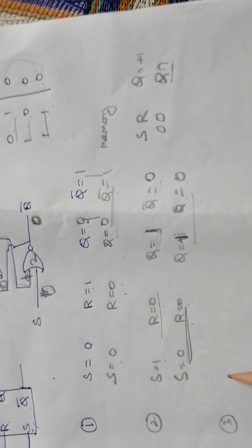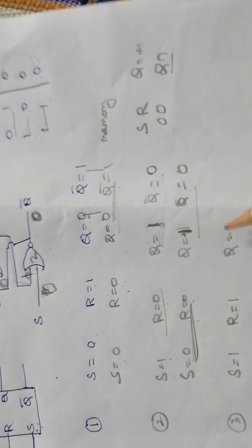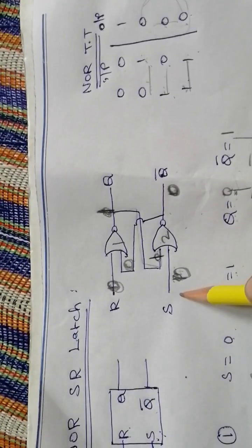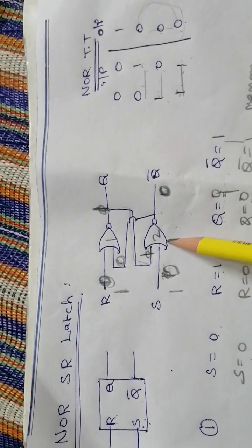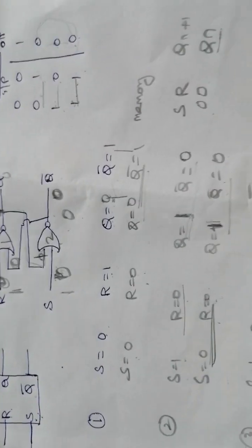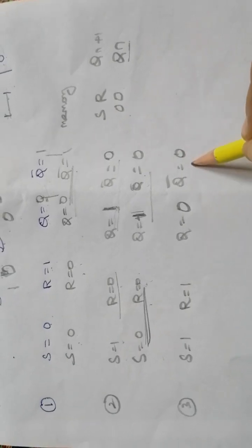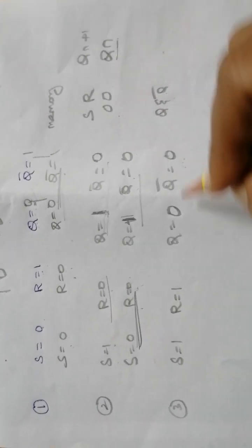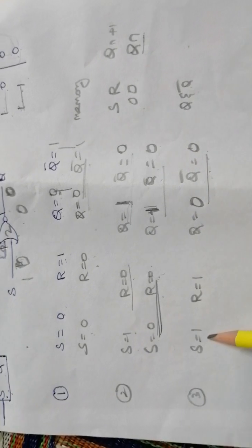Case 3: both inputs are 1 — S=1 and R=1. We check what Q and Q bar are. Since any one of the inputs is 1, the NOR gate output is 0 for both gates. So Q bar equals 0 and Q also equals 0. This is not a valid latch condition, because in a latch Q and Q bar must always be complementary. But here both Q and Q bar are 0, which is the same, so this state is not used.